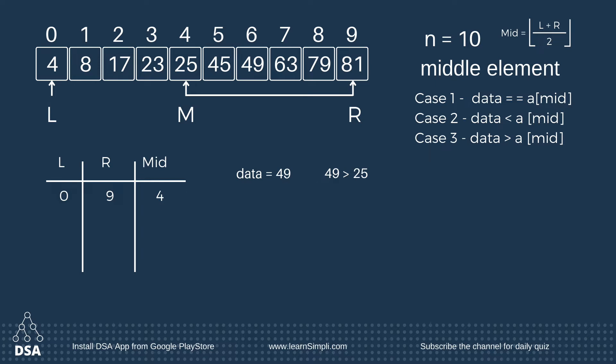We have divided the array with the middle value. We can say confidently that the data element is present in the right subarray because the array is sorted — all data greater than the middle value must be to the right of the array. Now we will search only in the right subarray.